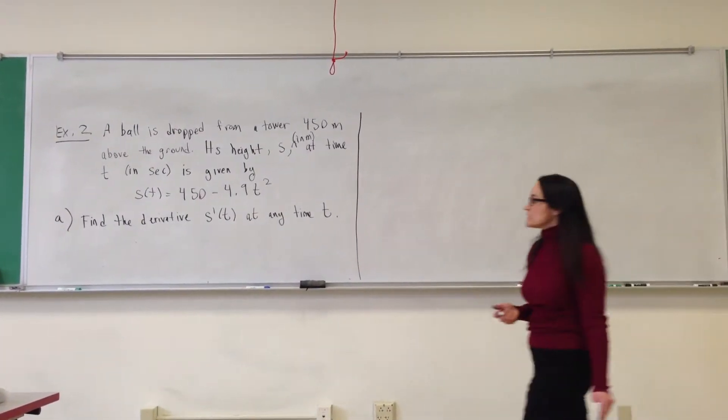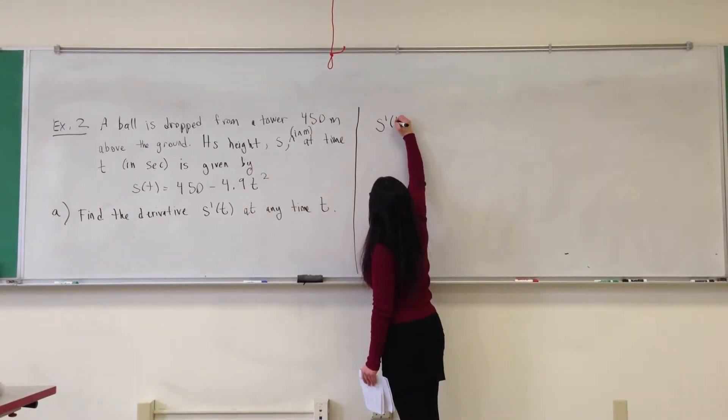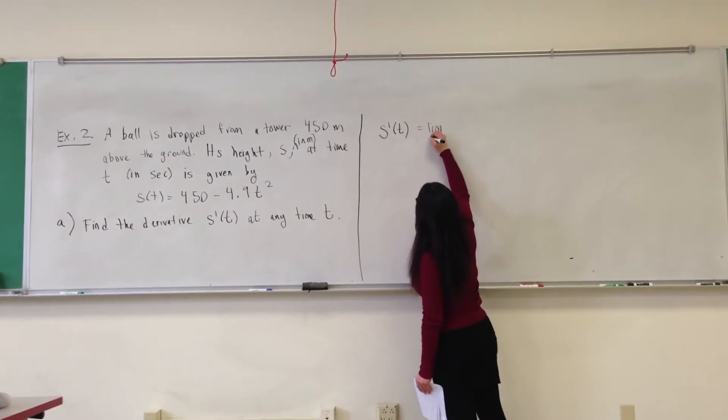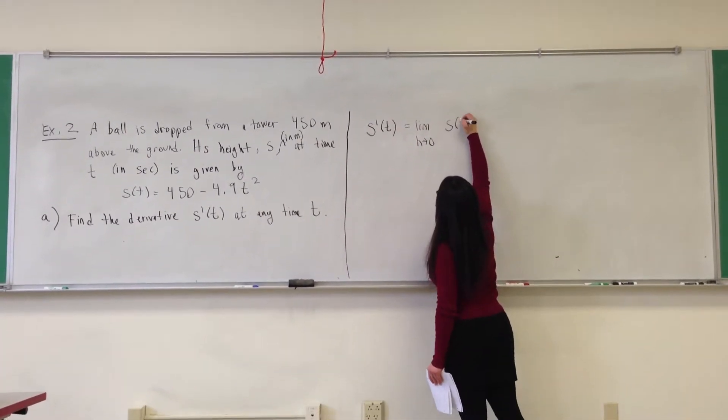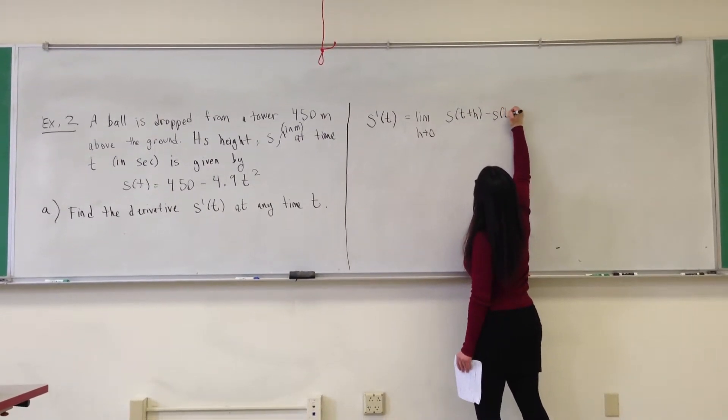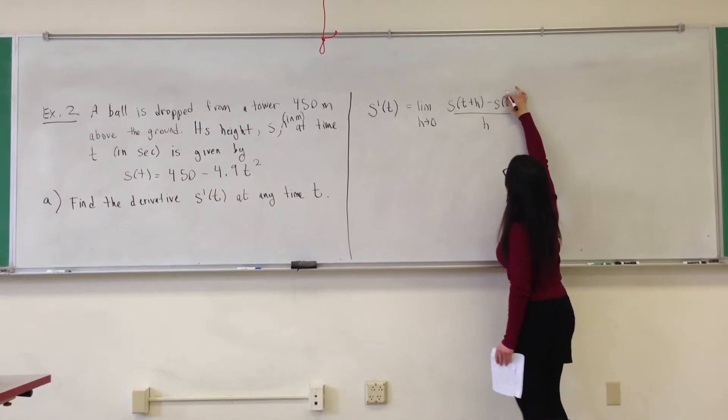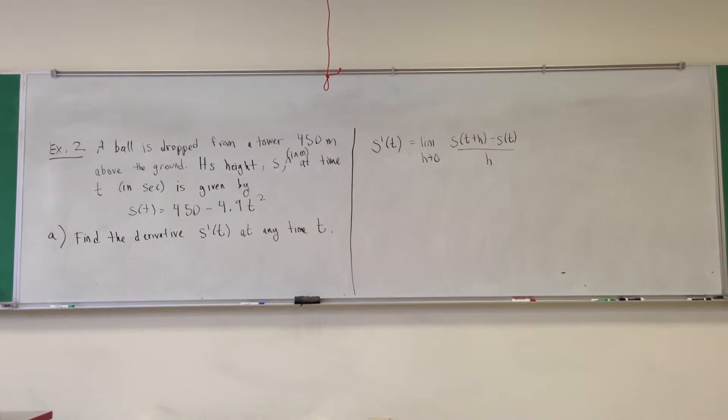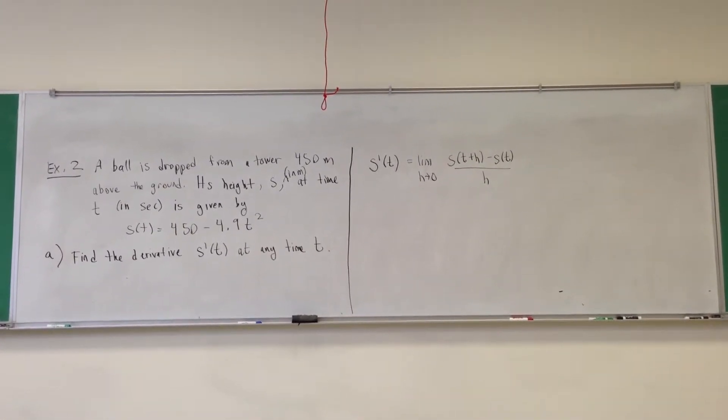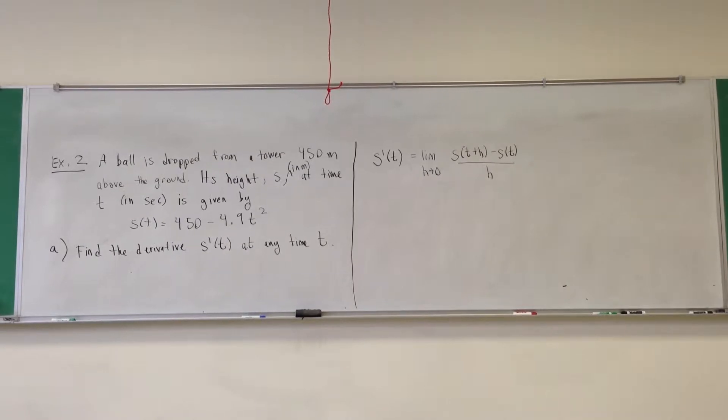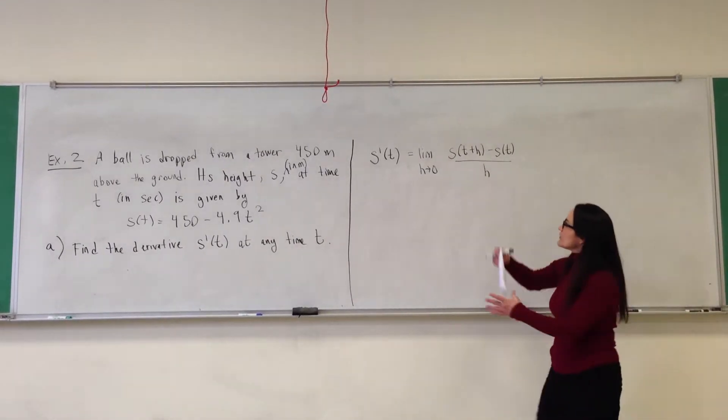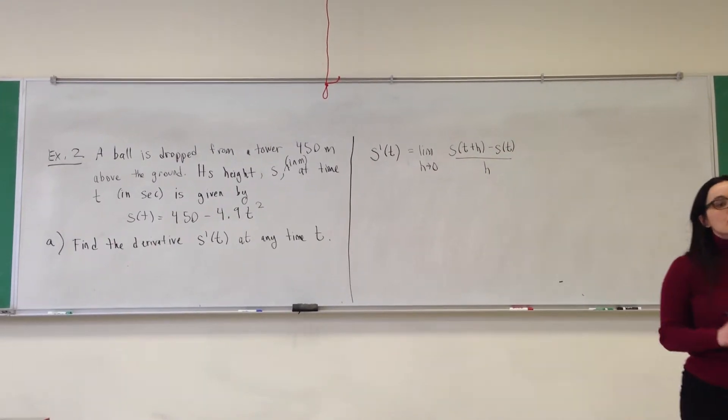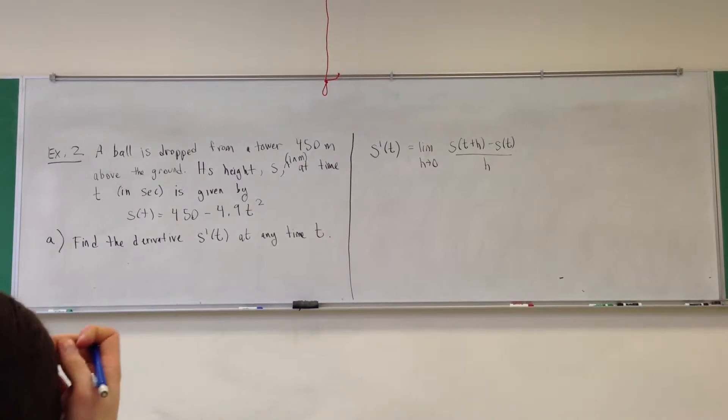And to do this we are going to use our definition of the derivative. The definition of the derivative says that s prime of t is the limit as h approaches zero, s of t plus h minus s of t all over h. This is okay, this is just the formula, but now instead of f I wrote s, instead of a I wrote t. Still the same formula, s prime of t is this limit.